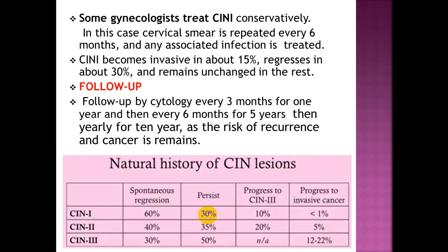Some gynecologists treat CIN 1 conservatively: the cervical smear is repeated every 6 months and any associated infection is treated. CIN 1 becomes invasive in about 15%, progresses in about 30%, and remains unchanged in the rest. Follow-up is by cytology every 3 months for 1 year, then every 6 months for 5 years, then annually for 10 years due to the risk of recurrence. Natural history of CIN 1: 60% spontaneous regression, 30% persist, 10% progress to CIN 3, and less than 1% progress to invasive cancer.